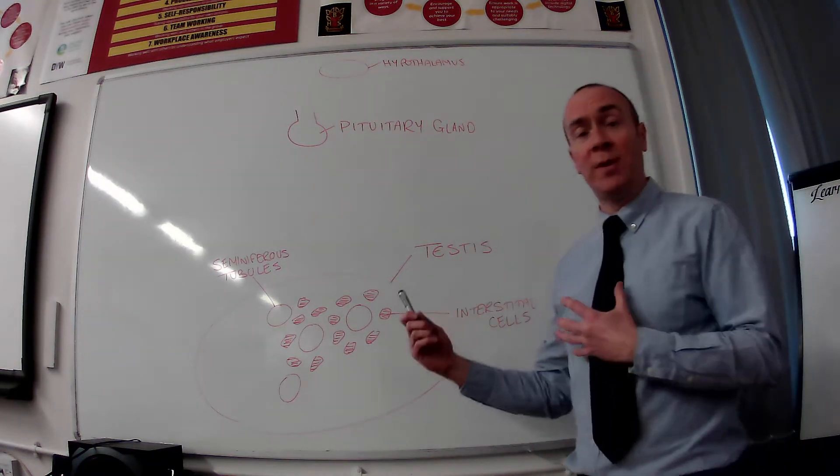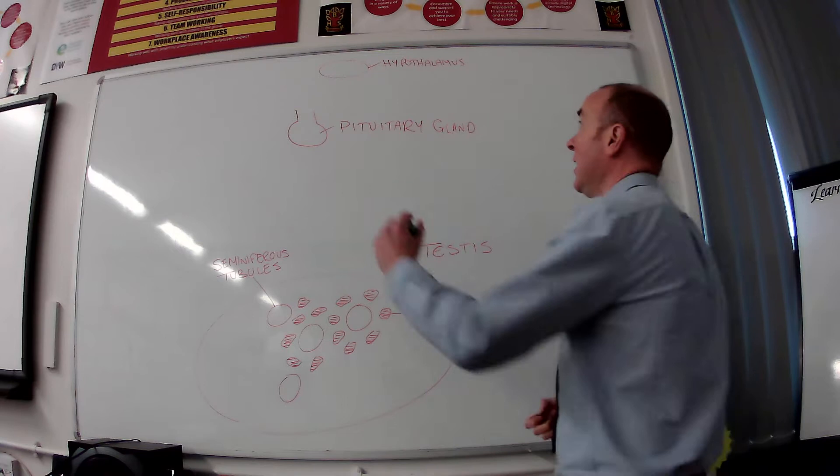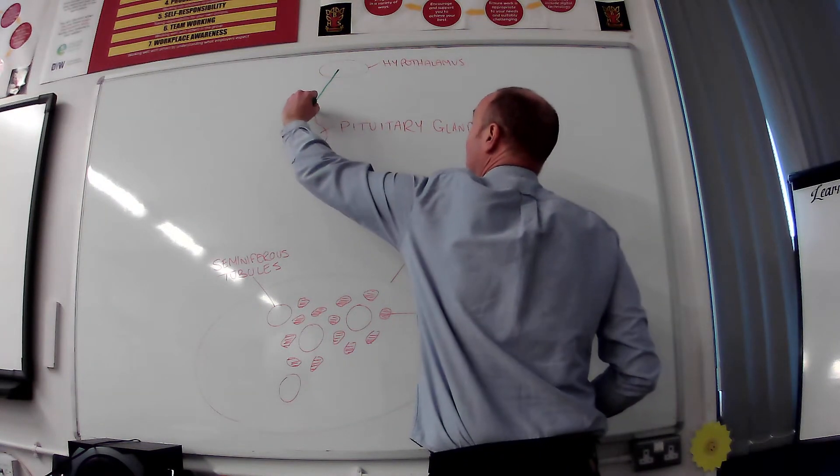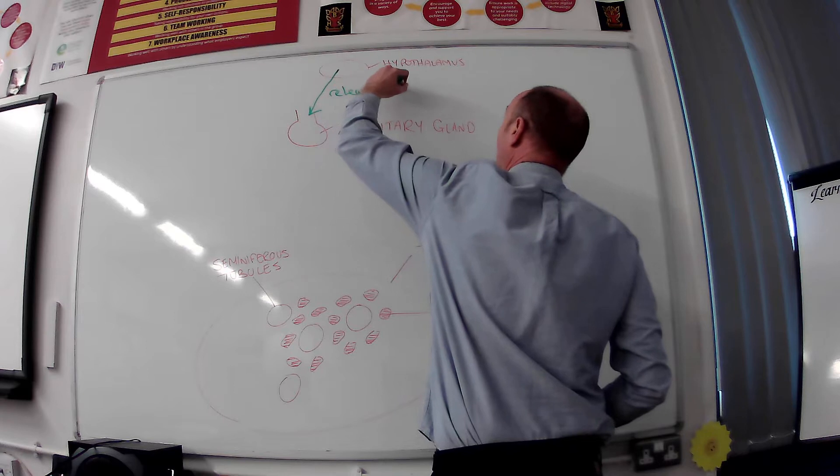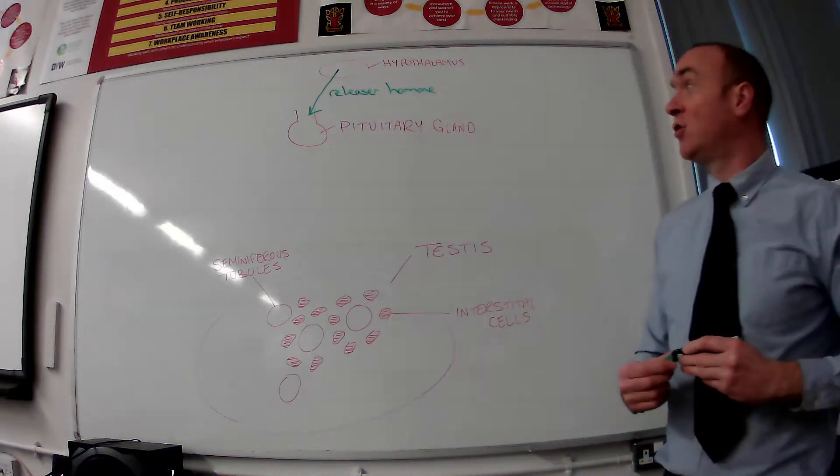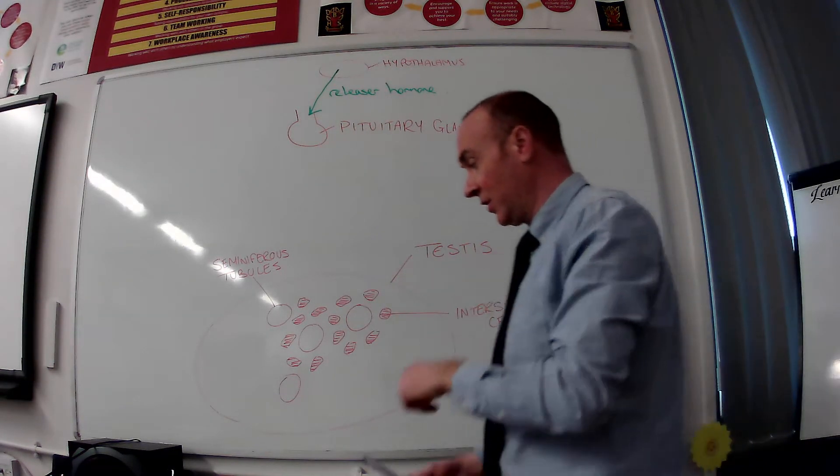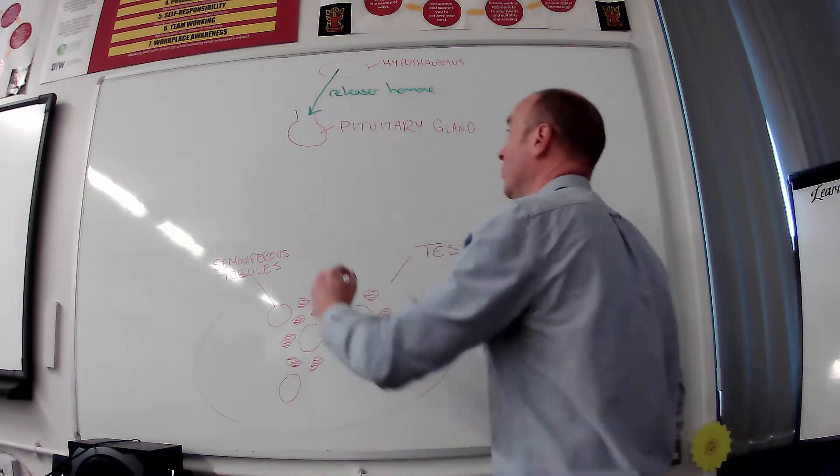Now the relationship between the hypothalamus and pituitary gland is the hypothalamus releases a hormone called releaser hormone.